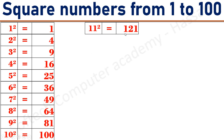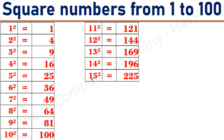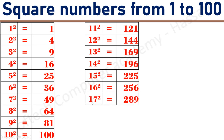11 square equals 121. 12 square equals 144. 13 square equals 169. 14 square equals 196. 15 square equals 225. 16 square equals 256. 17 square equals 289.